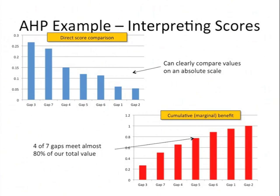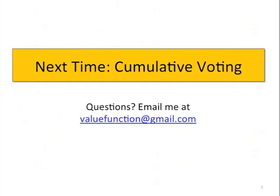For example, at the point we get to gap 5, we're saying that 4 of 7 gaps meet almost 80% of our total value. So you can see how this is a very powerful technique. And next time, we'll talk about another ratio scale method, a little bit simpler to set up, but it's also very useful. It's called cumulative voting. So if you have questions, as always, you can email me at valuefunction at gmail.com.